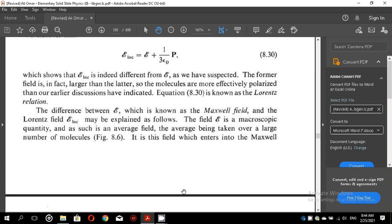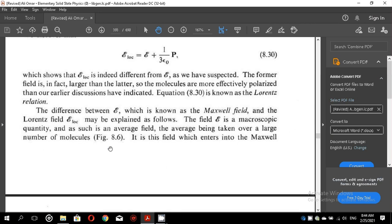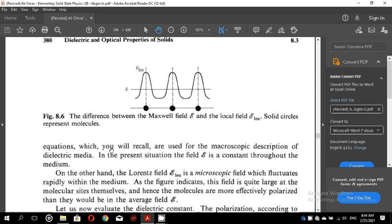You may be asked to derive this Lorentz relation in the examination. The difference between E, which is known as the Maxwell field, and the Lorentz field E local may be explained as follows. The field E is a macroscopic quantity and as such is an average field, the average being taken over a large number of molecules, equation 8.6. It is this field which enters into the Maxwell equations which you will recall are used for the macroscopic description of dielectric media. In the present situation, the field E is constant throughout the media.